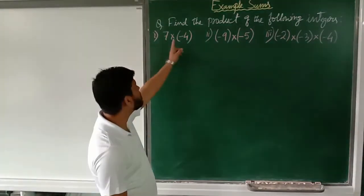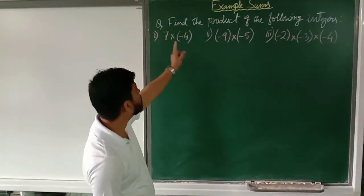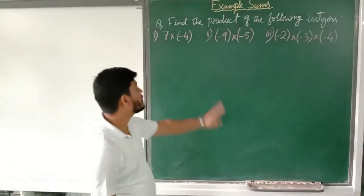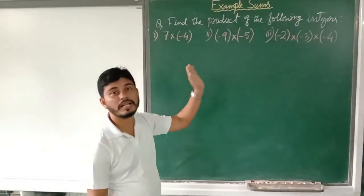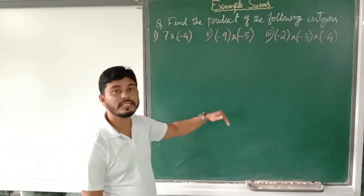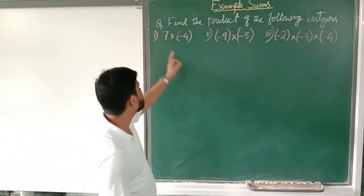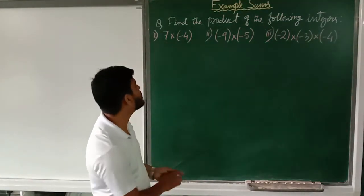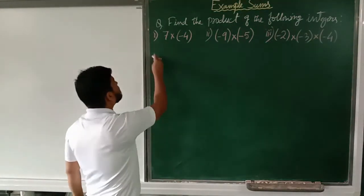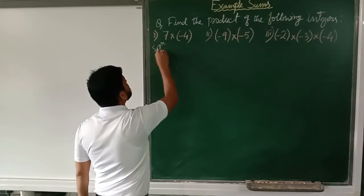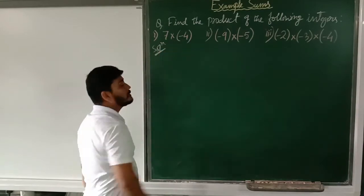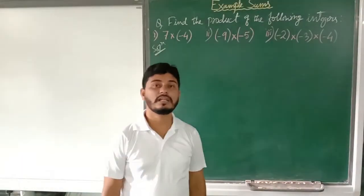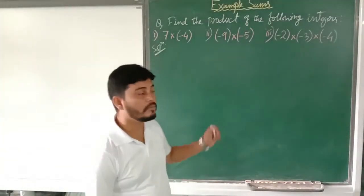So as you can see I have written a question: find the product of the following integers. Now, find the product means we have to multiply and get the result. So let us see how the concept of sign operation is used in multiplication.